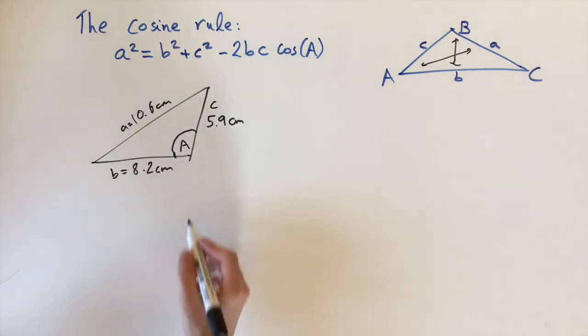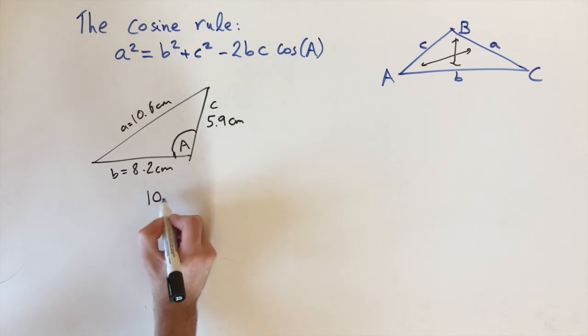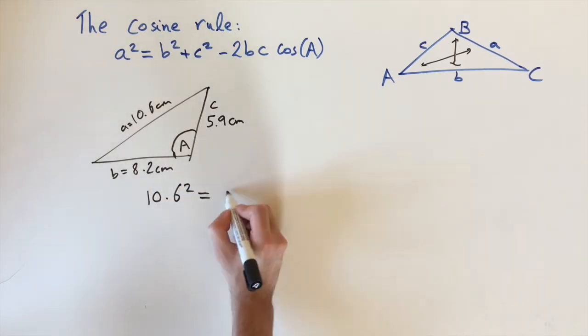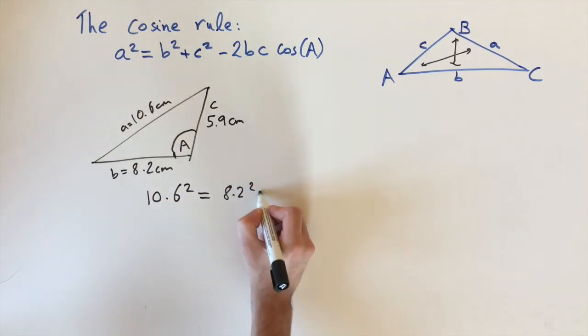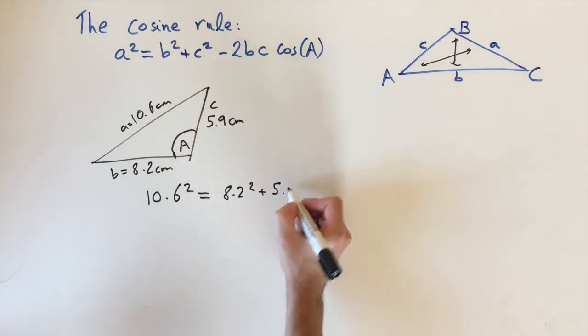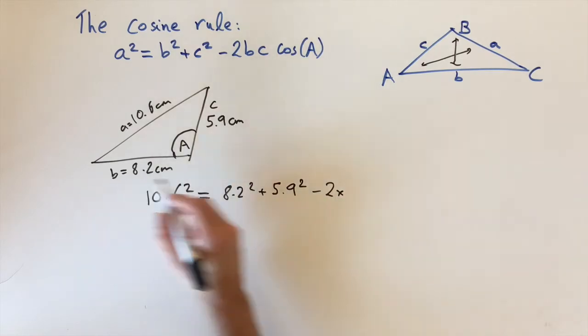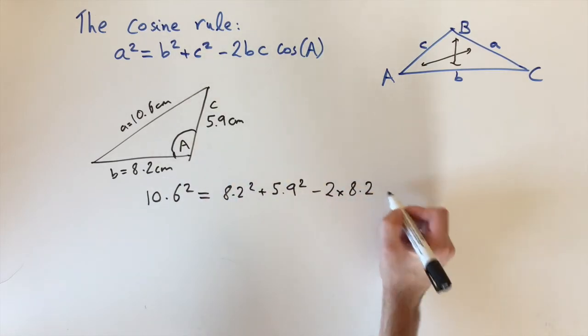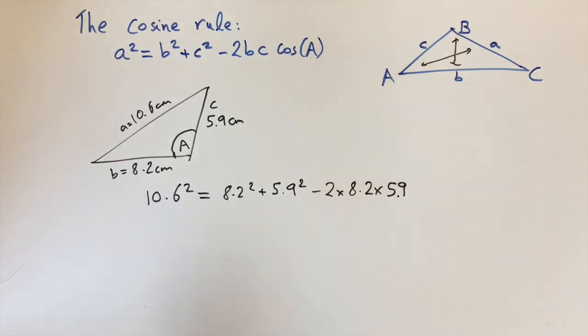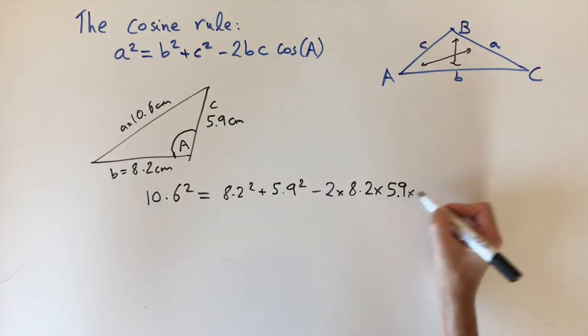We can just plug this all into the equation, so we have a squared, which is 10.6 squared, equals b squared plus c squared, which is 8.2 squared and 5.9 squared, then minus 2 times b times c, so 2 times 8.2 times 5.9, and then times cosine of A.